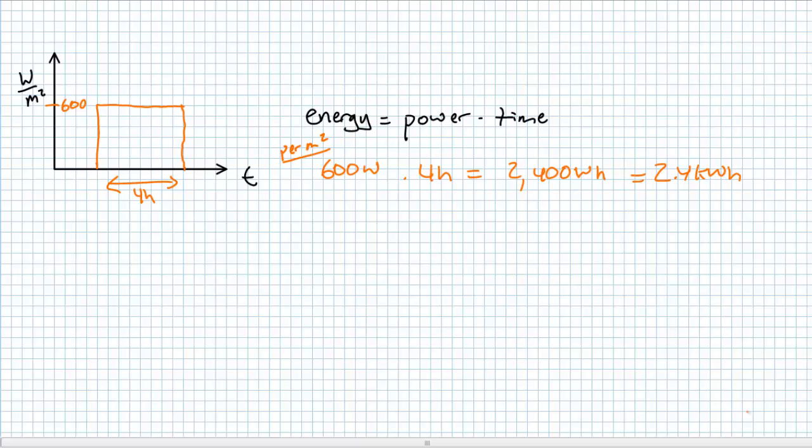If a kilowatt hour, remember, is 3.6 megajoules, we can convert it to its unadulterated form of energy units, 8.64 megajoules. This means that every meter squared of this planet receives 8.64 megajoules every day.